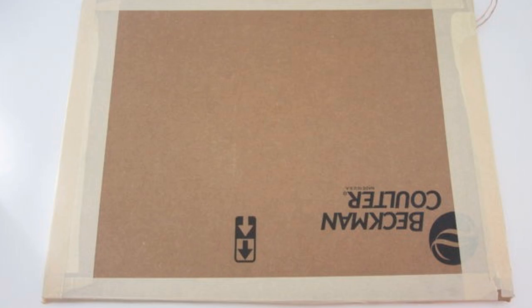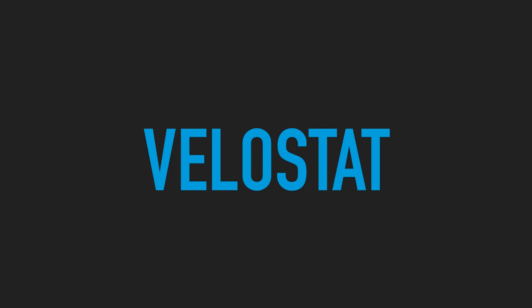So we're going to move on to a material called Velostat, which is very interesting. It's a type of packaging material. It's made out of polymeric foil that's impregnated with carbon, basically meaning that it is a special type of plastic that has a bunch of carbon inserted into it. And carbon is conductive.